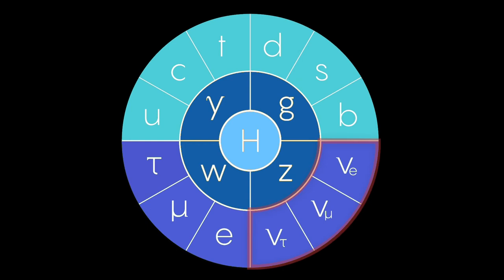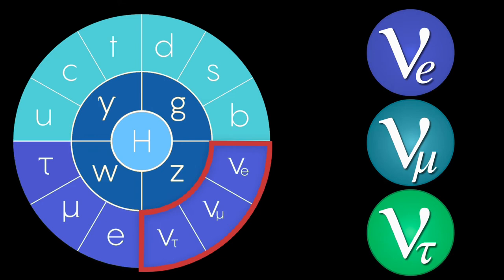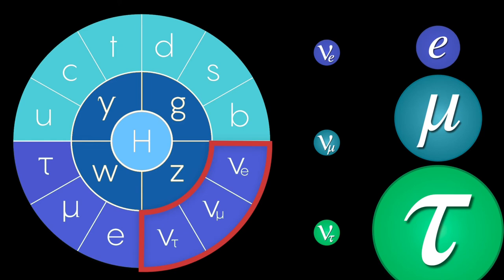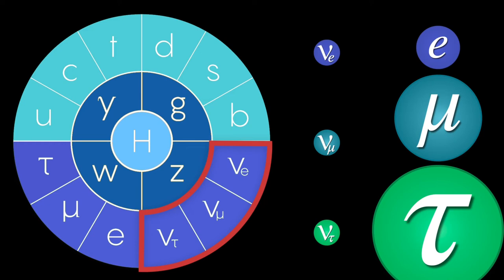According to the standard model of particle physics, there are three types of neutrinos: electron neutrinos, muon neutrinos, and tau neutrinos. Each has its respective charged partner, the electron and its two much heavier and short-lived relatives, the muon and the tau.